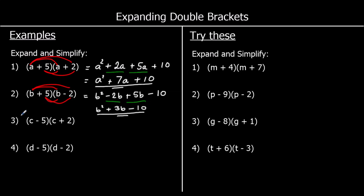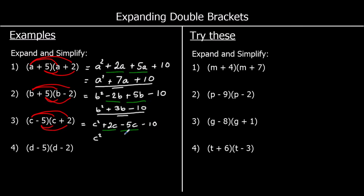On to the third one. c times c is c squared. c times a positive two — positive times positive is positive — so 2c. Negative five times c is negative 5c. And negative five times positive two — negative times positive is negative — and five times two is ten, so negative ten. Collecting the c terms: 2c take away 5c is negative 3c, so we've got c squared minus 3c minus ten.